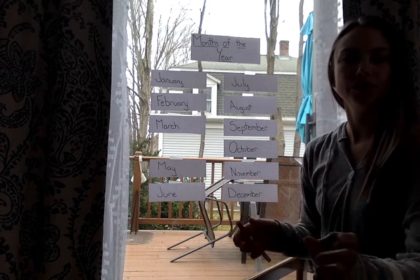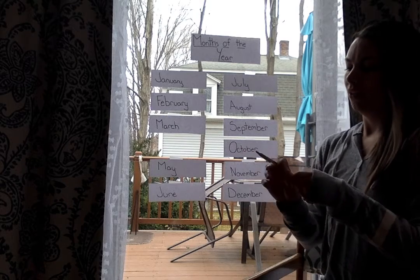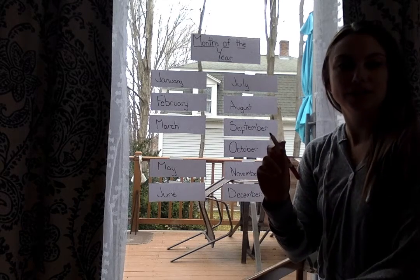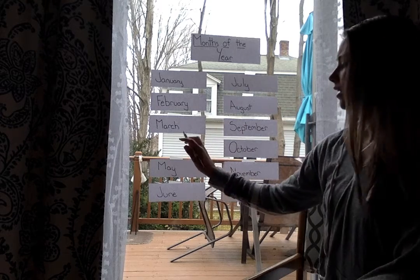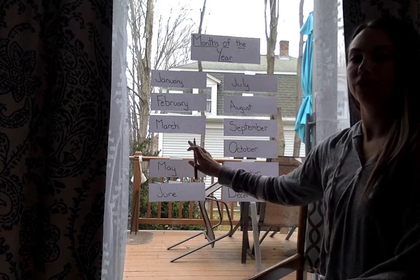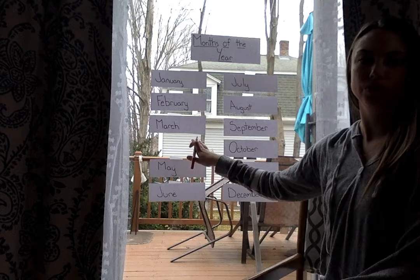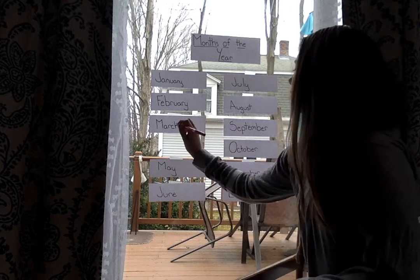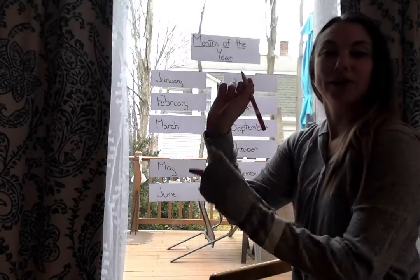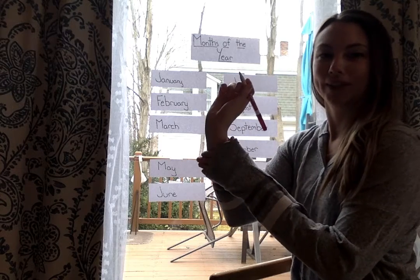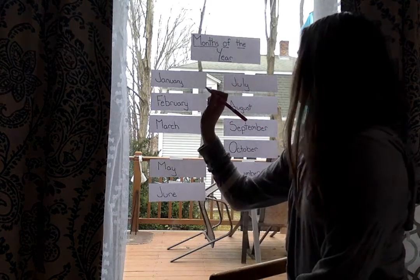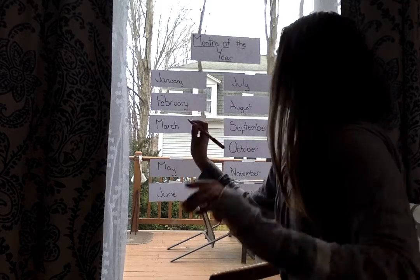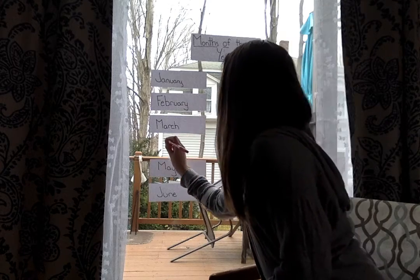I also like to have the students write. One fun activity you can use is if you have an expo marker and glass like windows or sliding doors, the kids can write on it. My OT friends will like it because it's a good way to work different muscles in your hand and give the students a little more support. So I'm gonna write April.